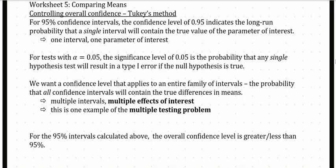Because each interval has 95% confidence, the more intervals we do the worse our type 1 error gets. This video is about Tukey's method, which controls our overall confidence level and therefore also controls our overall type 1 error. For 95% confidence intervals, the confidence level of 0.95 indicates the long-run probability that a single interval will contain the true value of the parameter of interest.